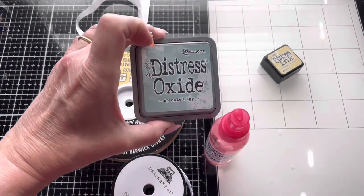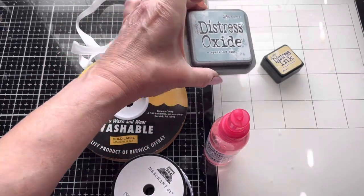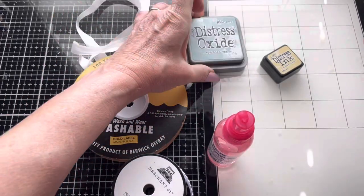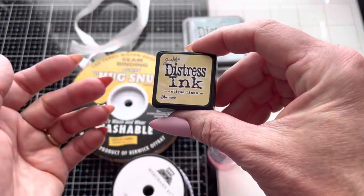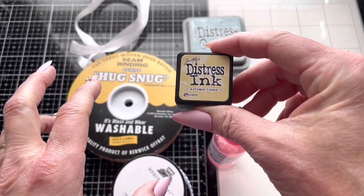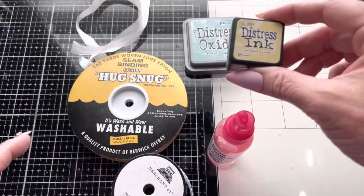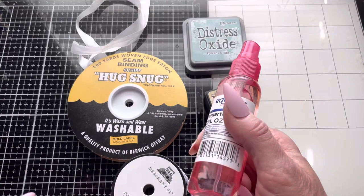You're going to need either distress oxide or distress inks—you need a color and then antique linen, which softens the color so it's not quite so harsh and looks more natural. Last but not least, you need a water spray bottle.